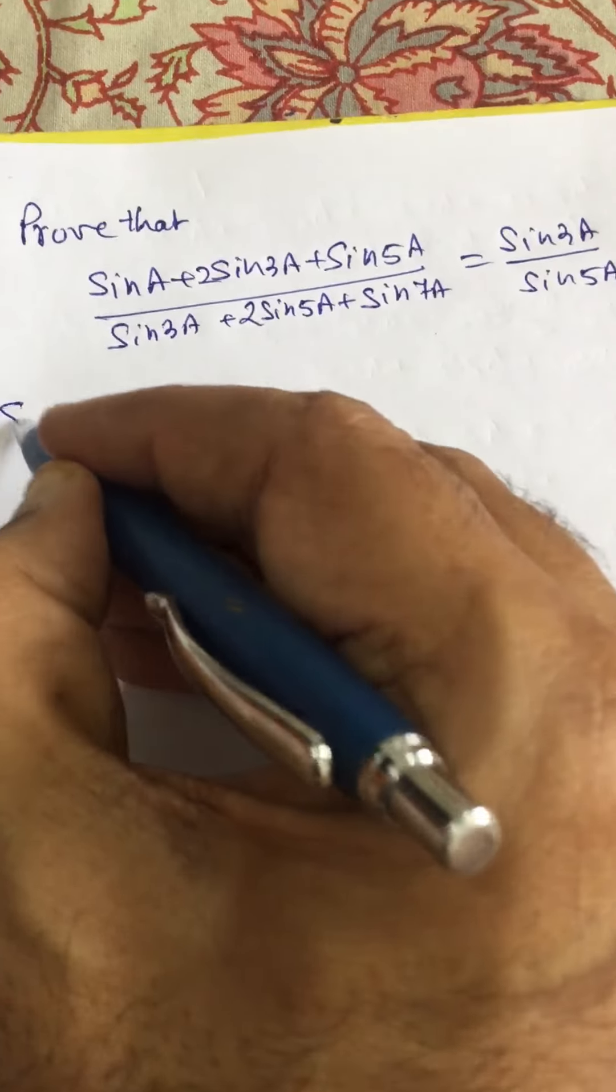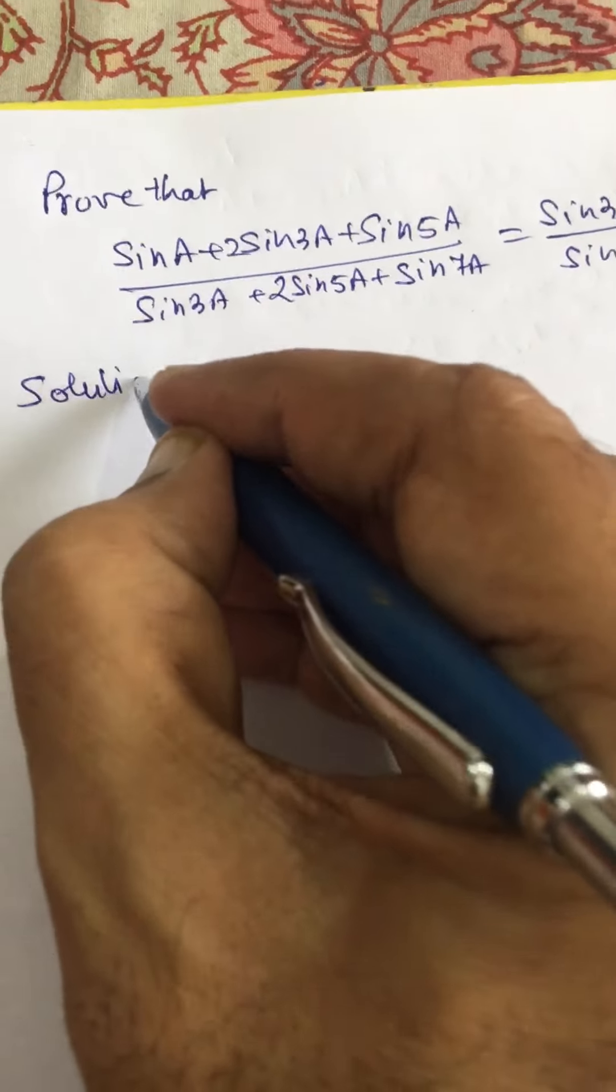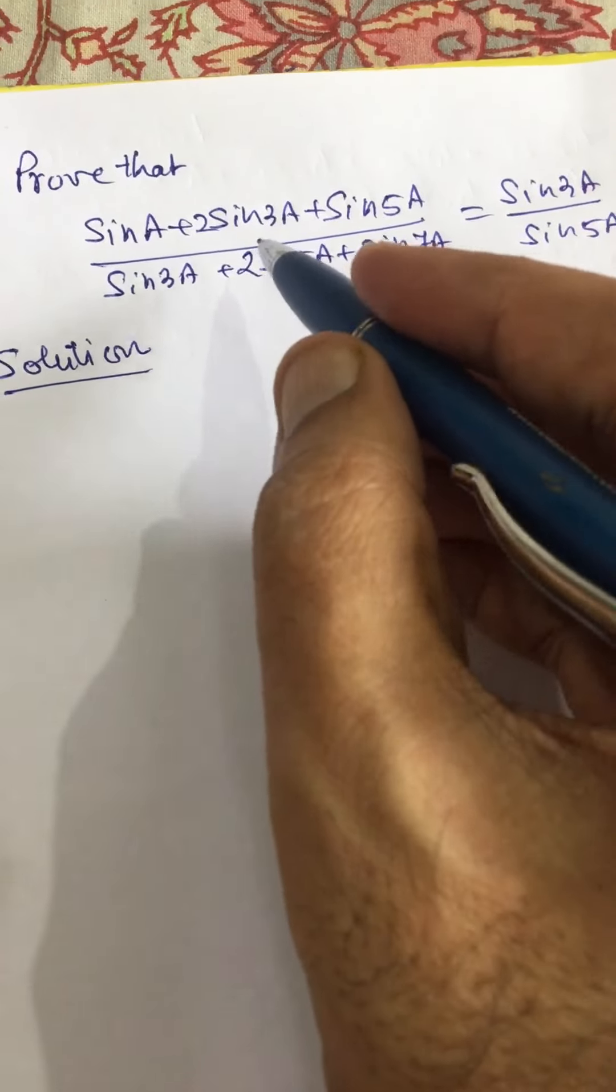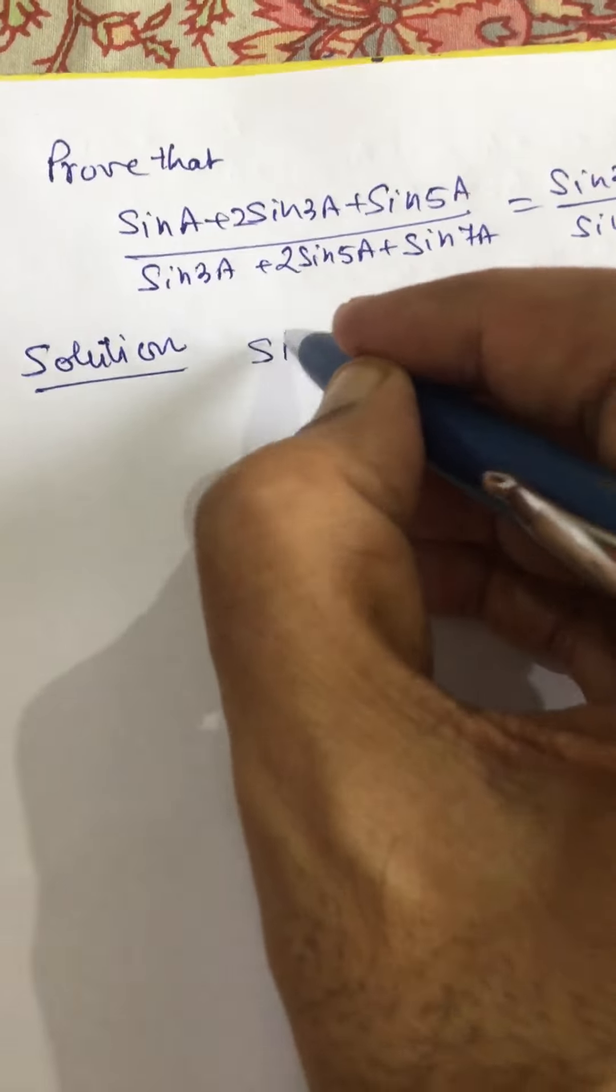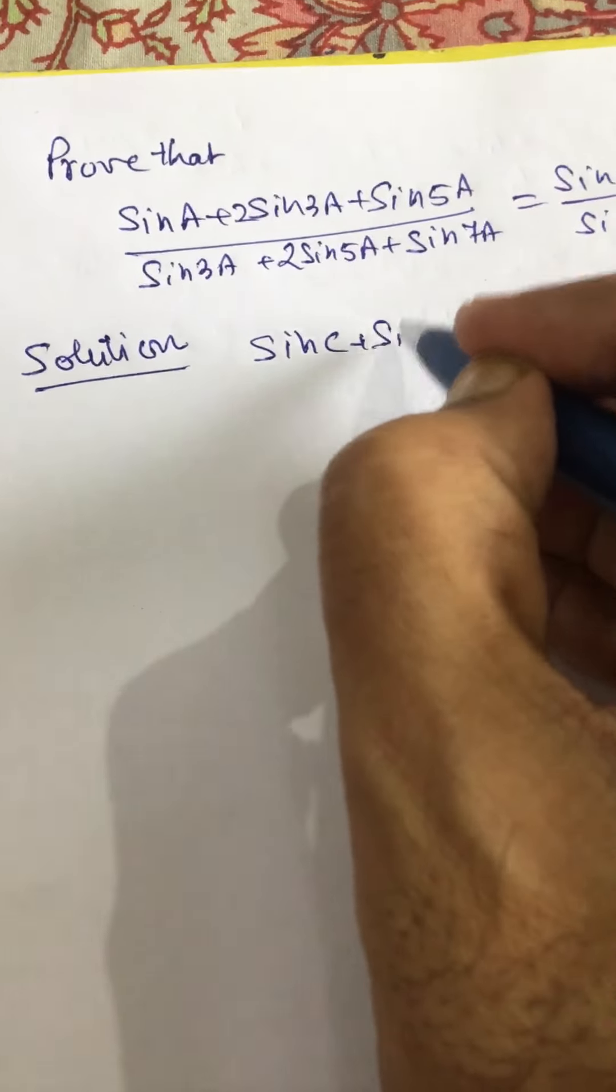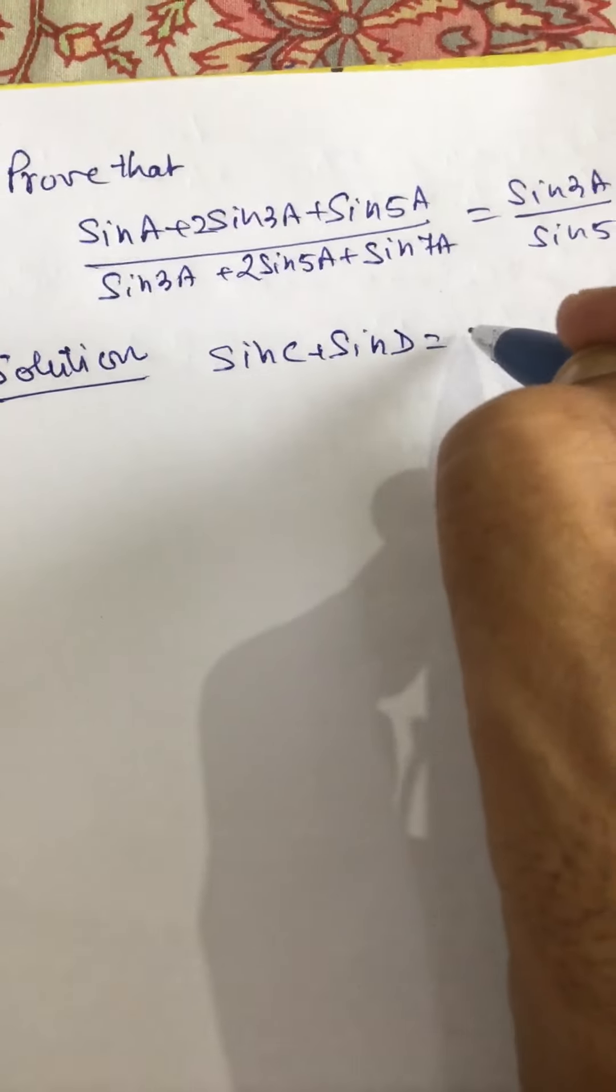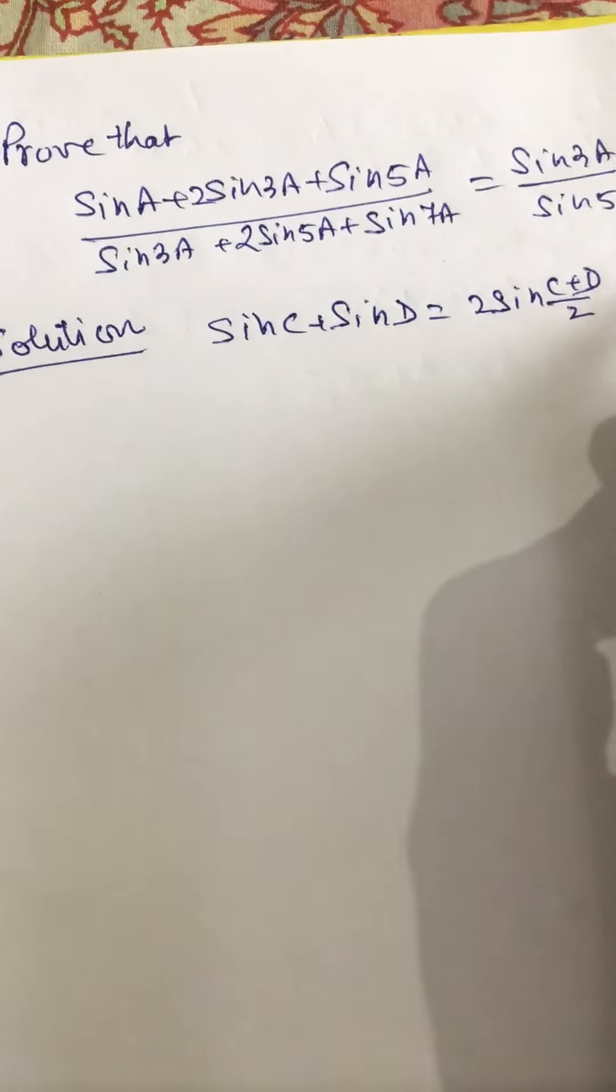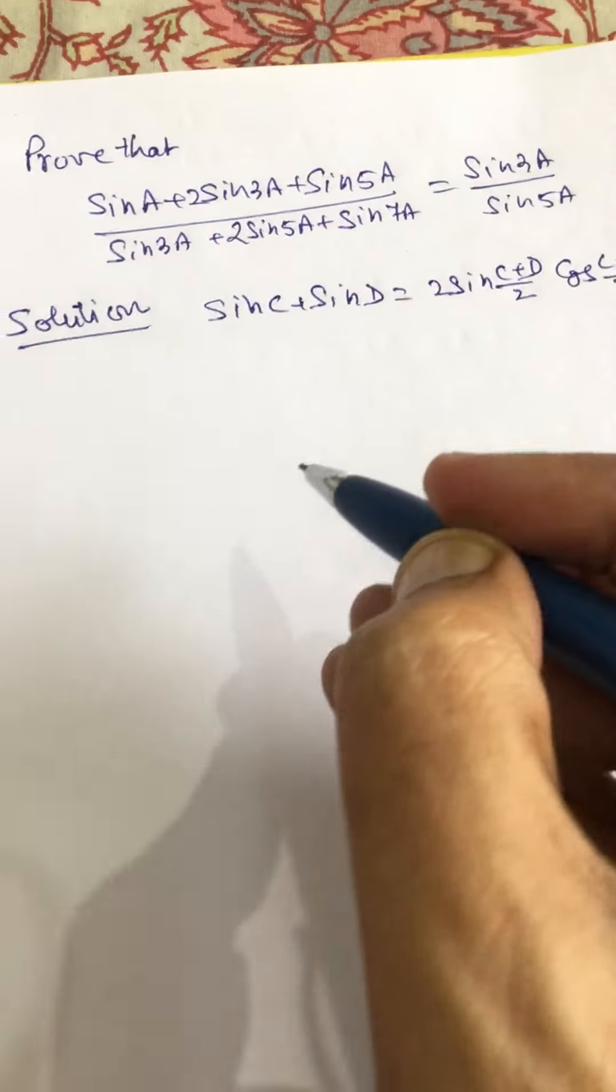So we can proceed as follows. We know that sin C + sin D equals 2 sin((C+D)/2) times cos((C-D)/2).